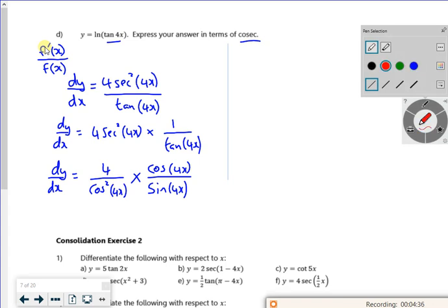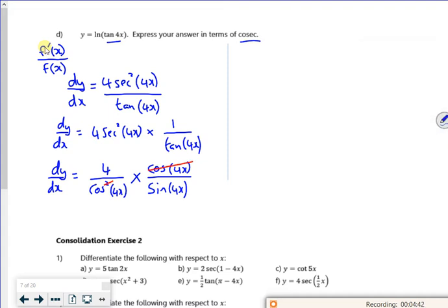Now, if you look at what will cancel, cos will cancel with one of the cos's on the top. So I've got dy by dx is now 4 over cos 4x times cos 4x times sine 4x. Now I want it in terms of cosecant, cosecant is 1 over sine. So I need to make that in terms of 1 over sine.